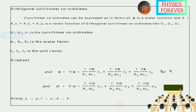For orthogonal curvilinear coordinates u1, u2, u3: h1, h2, h3 are scale factors; l1, l2, l3 are unit vectors. The gradient is expressed as: del(phi) = (1/h1)(∂phi/∂u1)·l1 + (1/h2)(∂psi/∂u2)·l2 + (1/h3)(∂phi/∂u3)·l3.